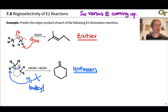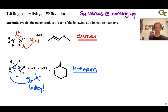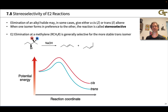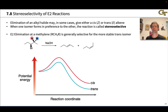A good piece of homework: pause and draw the major products if we switch the reagents — using NaOH in the bottom reaction and tert-butoxide in the top reaction. Elimination reactions often have stereochemical issues associated with whether the product has a cis or a trans double bond. When one forms in preference to the other, the reaction is called stereoselective.